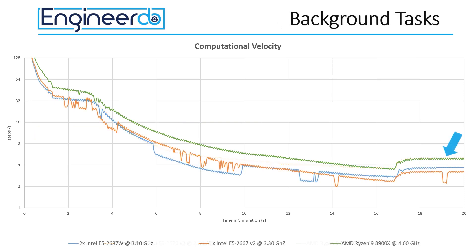Another interesting fact we can find in the results is a partly reduced computational efficiency during the simulation. The orange and blue lines show a reduction of the step rates by roughly 25% for some time during the runtime. This could be a result of background tasks these computers perform. Another reason could be insufficient cooling; however, cooling issues would probably stay during the runtime and would not fluctuate like we see here.